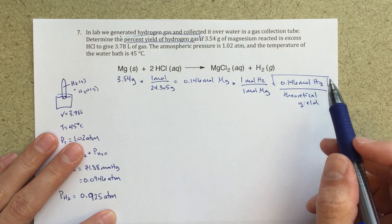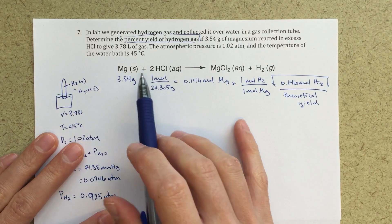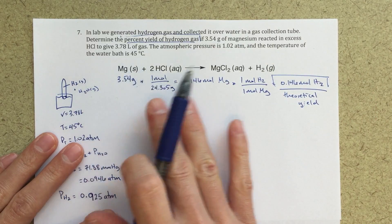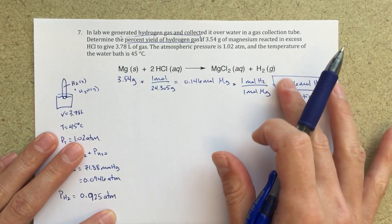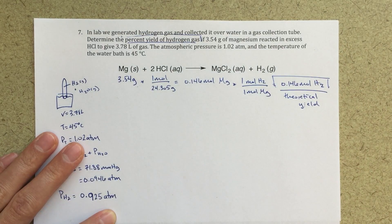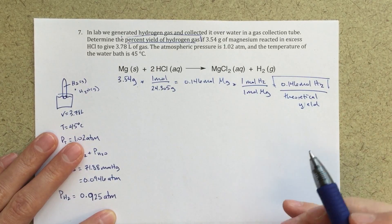So what this represents, this is if this reaction went perfectly, 3.54 grams of magnesium converted completely to hydrogen, I would gain, I would get 0.146 moles of hydrogen gas as my product. Correct. Okay.